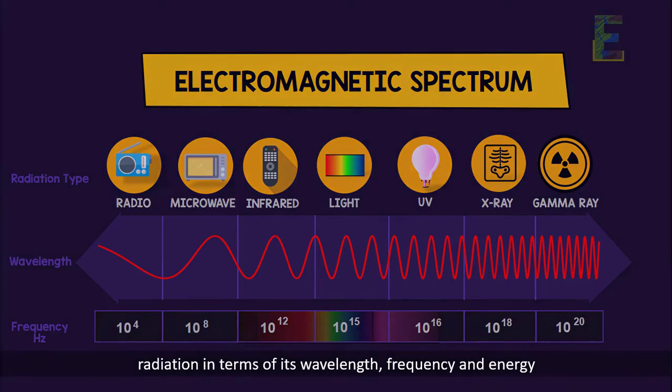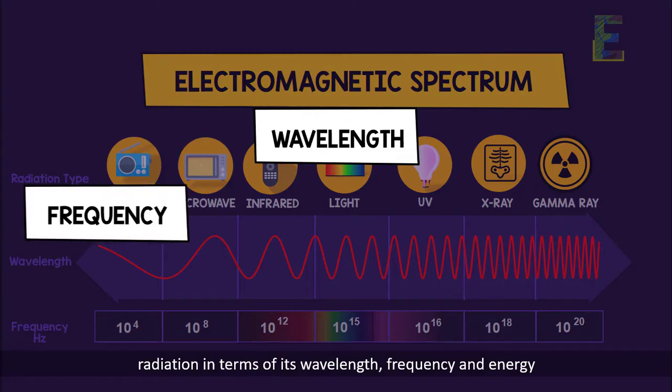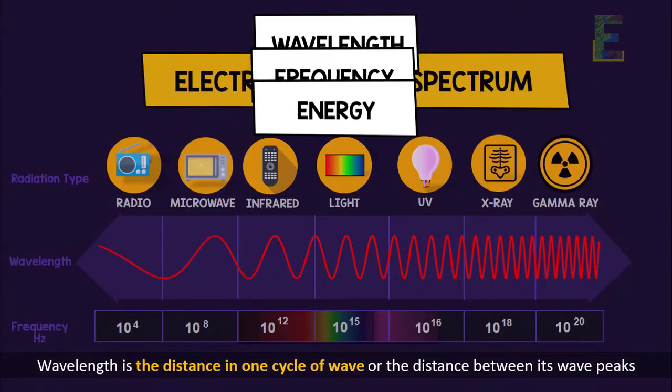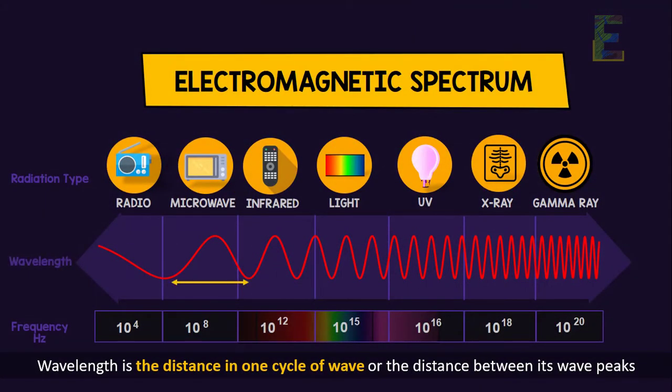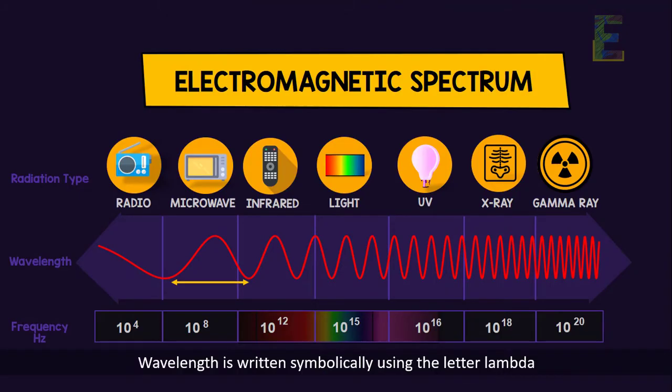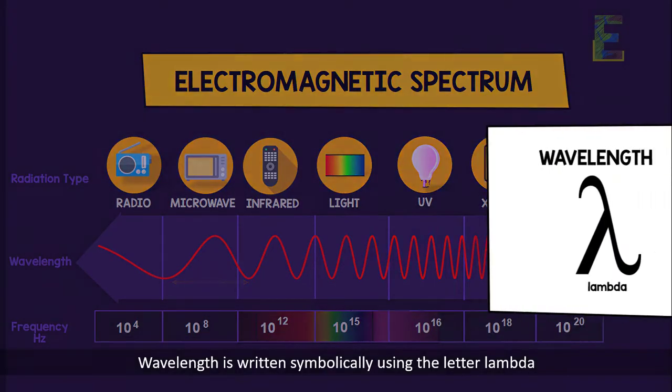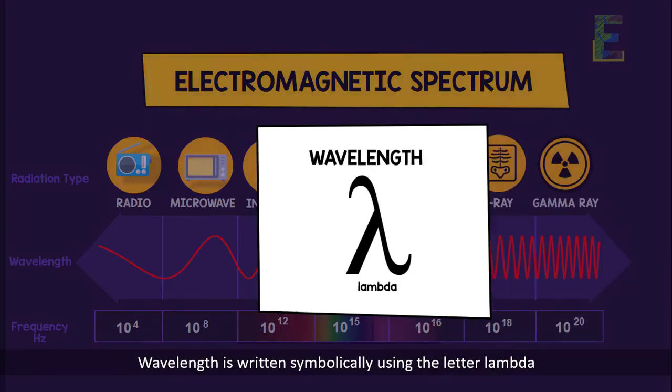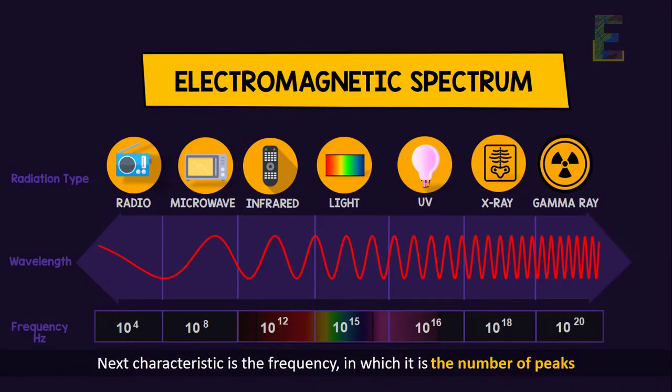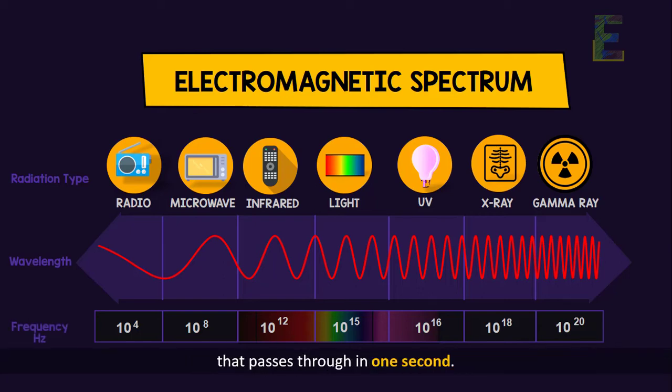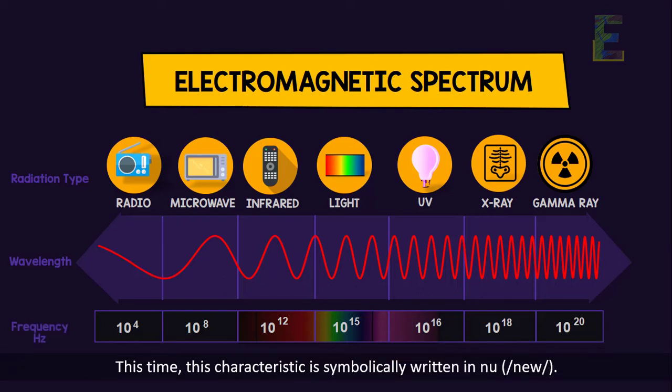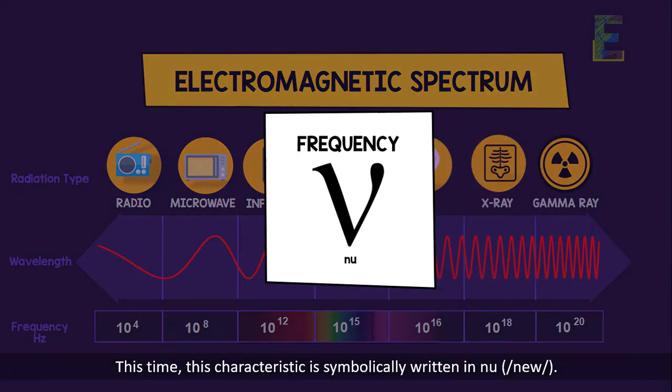Wavelength is the distance in one cycle of wave, or the distance between its wave peaks. Wavelength is written symbolically using the letter lambda. Next, this characteristic is the frequency, which is the number of peaks that passes through in one second. This characteristic is symbolically written in nu.